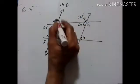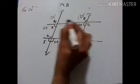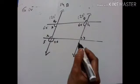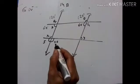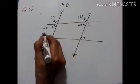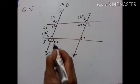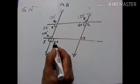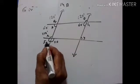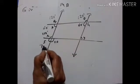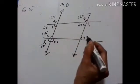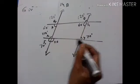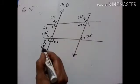If T is 120, then Q is equal to 120 — corresponding angles. If this is 110, vertically opposite angles give X is equal to 110. The linear pair gives S is equal to 70 degrees. Y is also 70 degrees — exterior alternate angles.